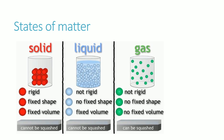When it comes to volume, solids and liquids have a fixed volume, but gases do not. In terms of compressibility, solids and liquids cannot be compressed, whereas gases can be compressed because their particles are so widely spread apart and have more room to be pushed together. That's another key difference between the states.